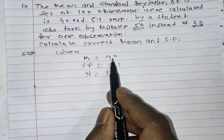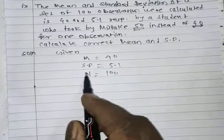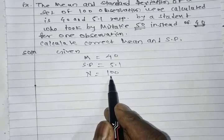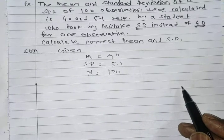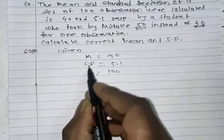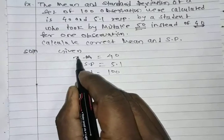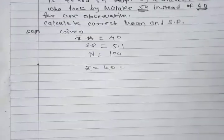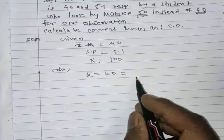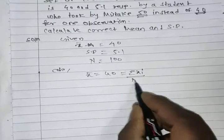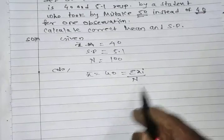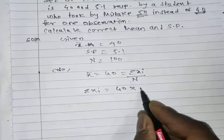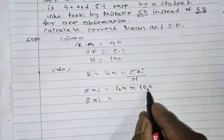Given: mean x-bar = 40, standard deviation = 5.1, number of observations N = 100. Using the formula x-bar = summation Xi upon N, we get summation Xi = 40 × 100 = 4000.